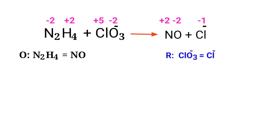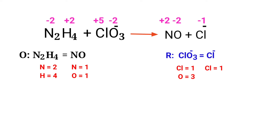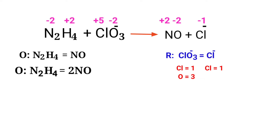Now balance the number of atoms in the two half reactions. In the oxidation half reaction, to balance the nitrogen atoms, we need to put a coefficient of 2 in front of NO. The nitrogen atoms are now balanced. Next, we need to balance the oxygen atoms — to do this, we produce water molecules.